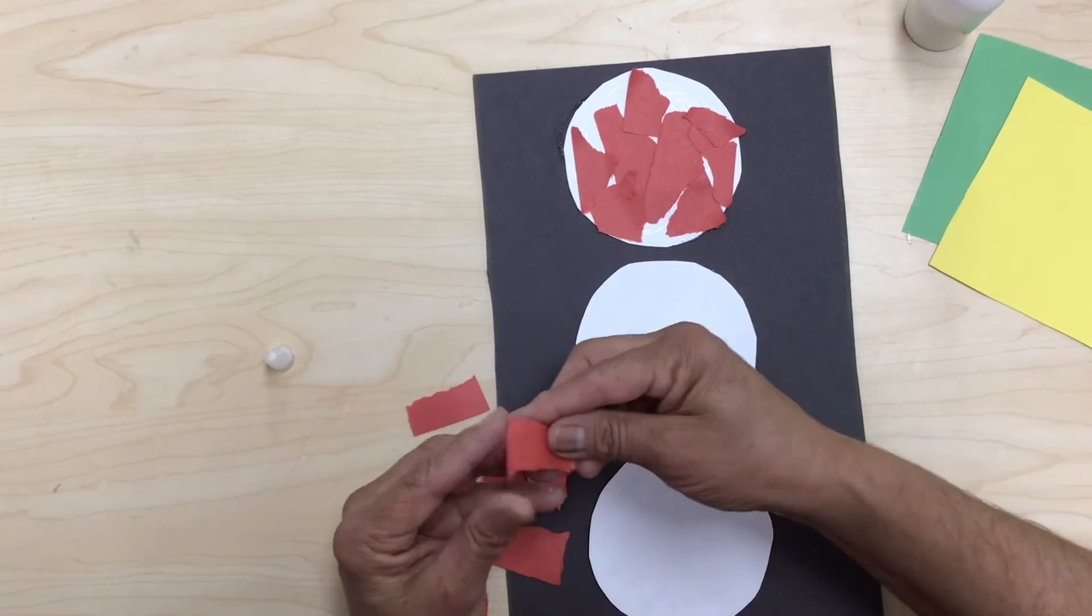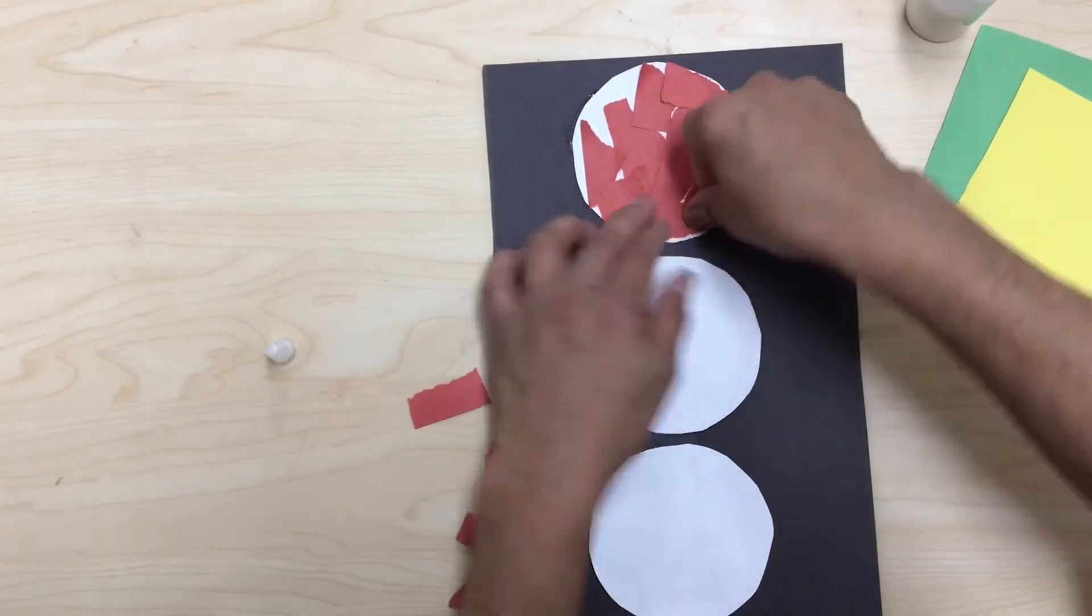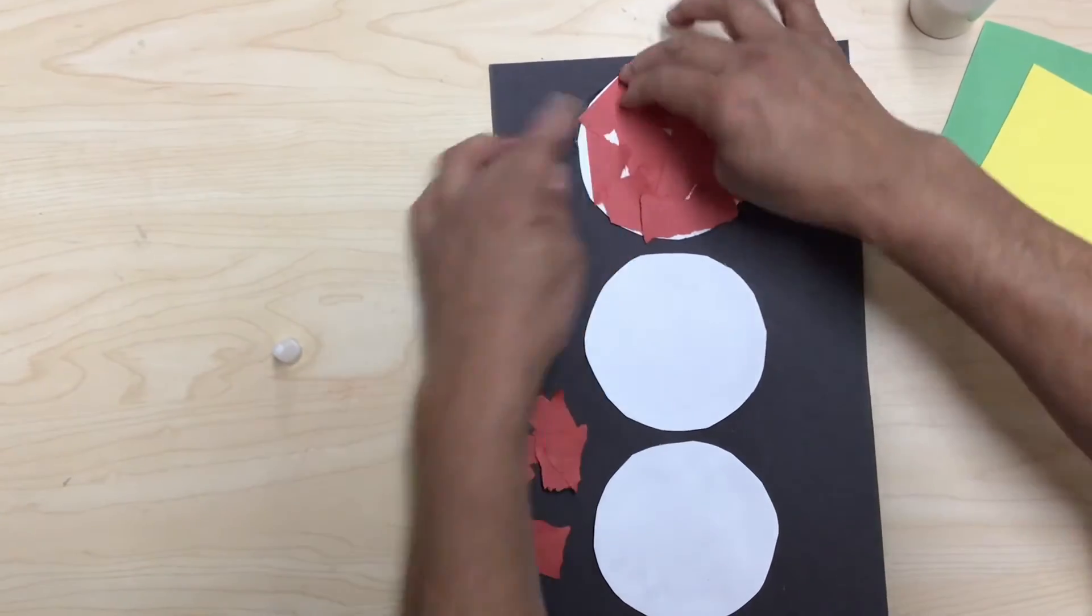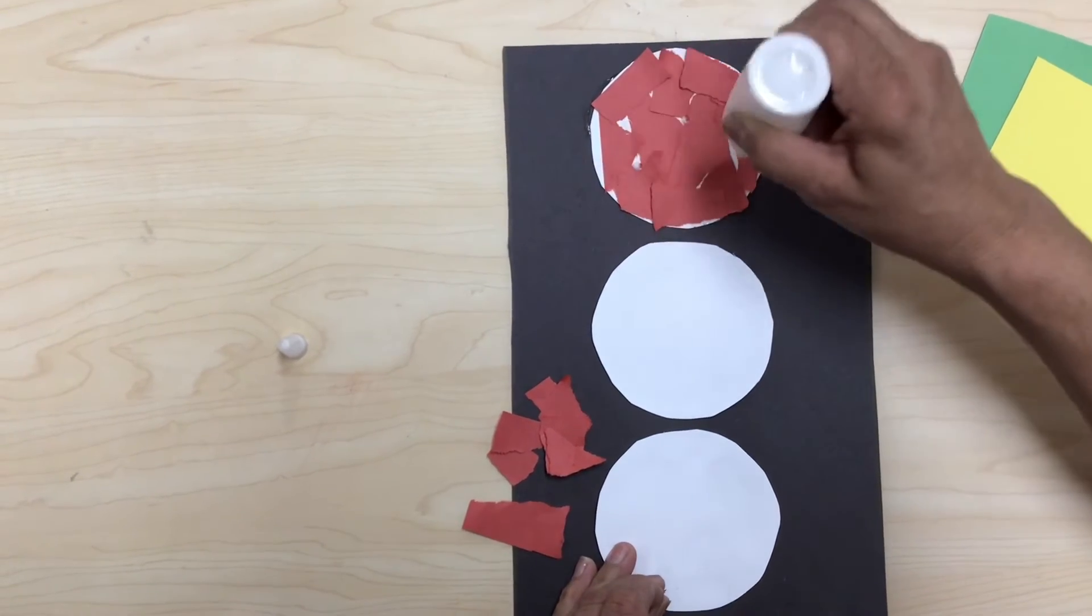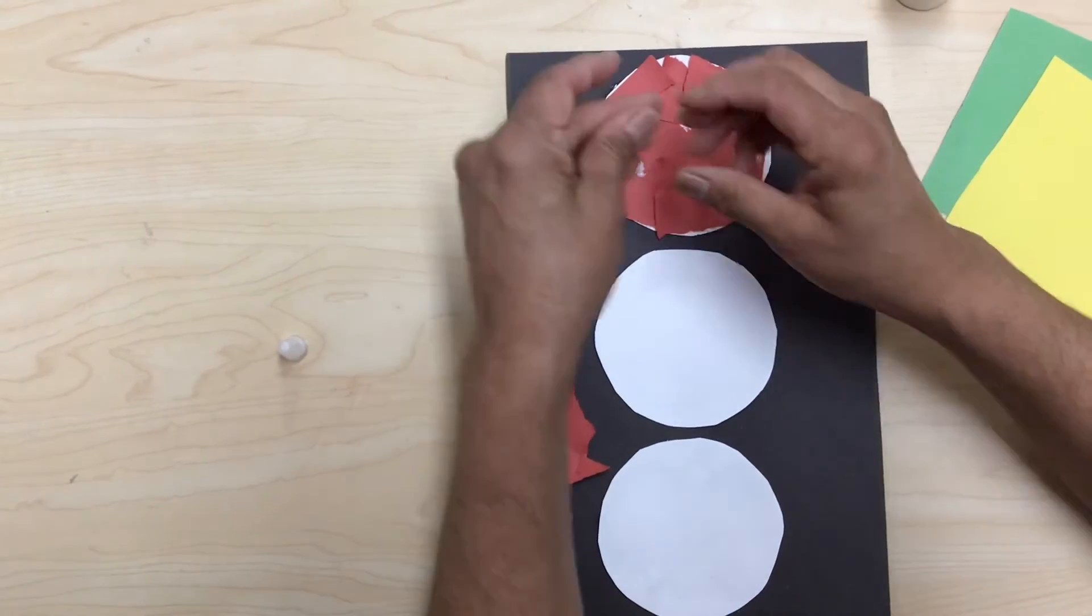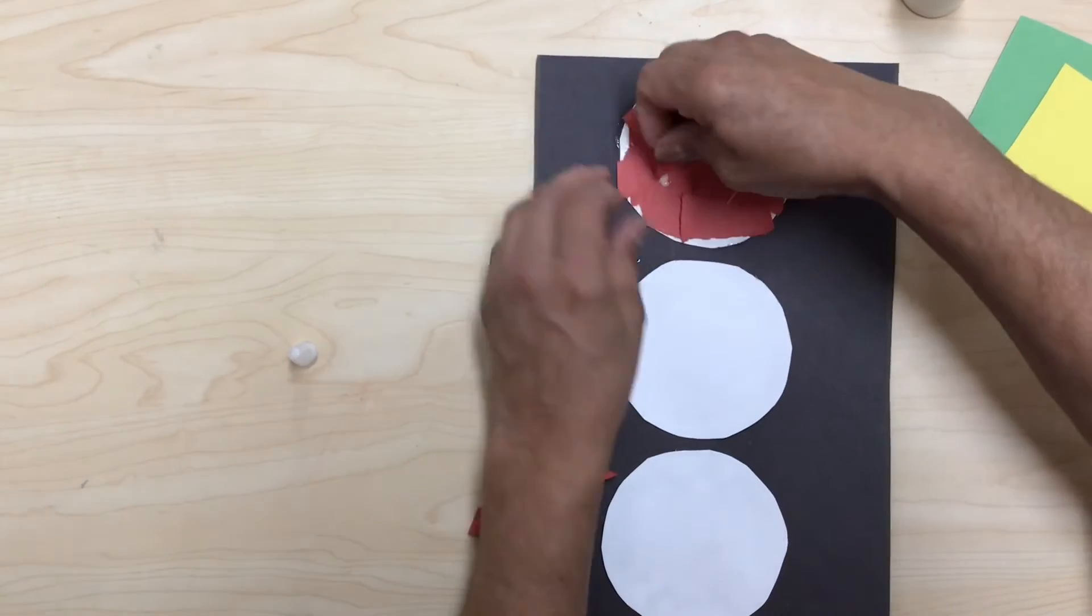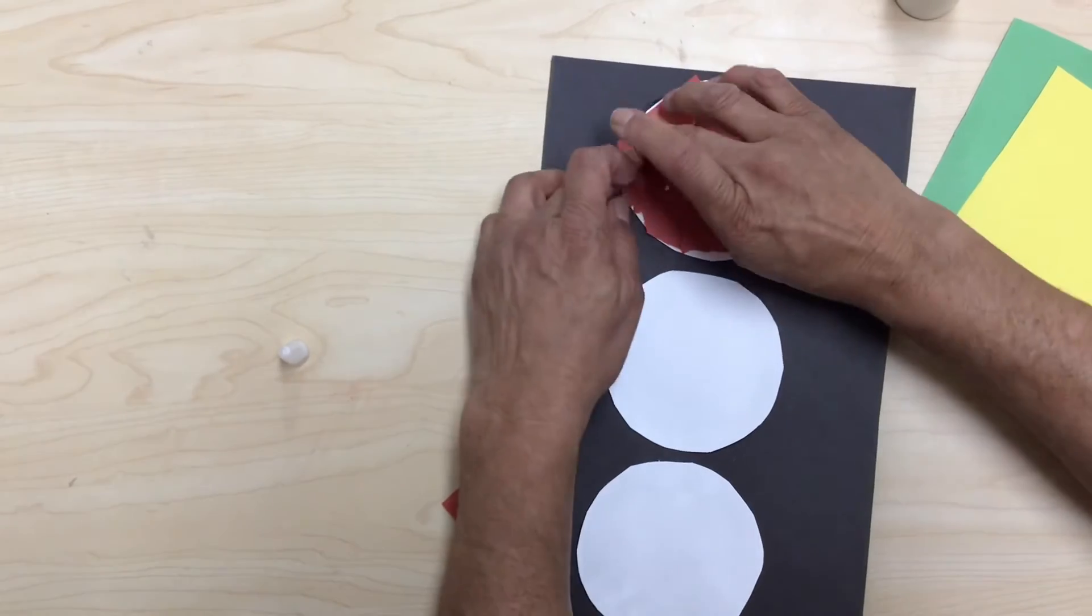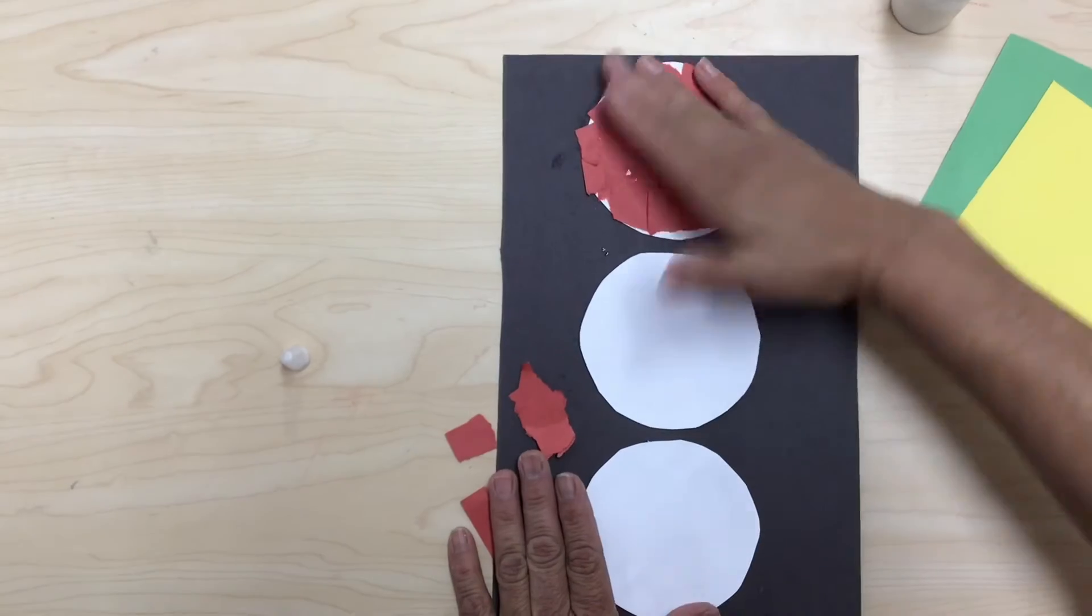And let's see, I still have some white spots, so I need to cover that white spot. Let me get this one right there. Maybe I need a little bit of glue in the white spot so I can put red construction paper right here, and then I'll put this one right here. Maybe one more. So this is my red light.